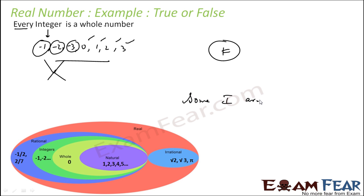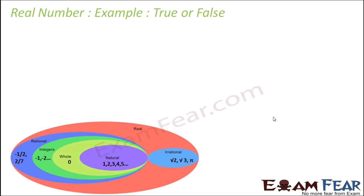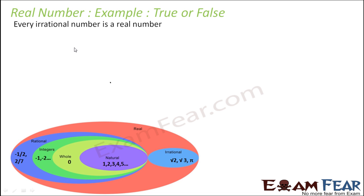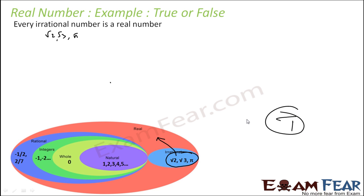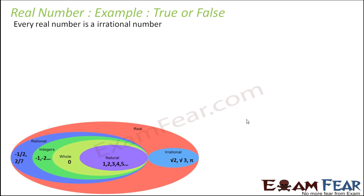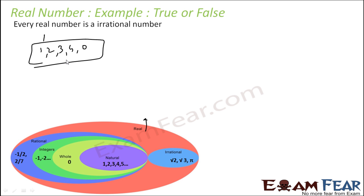Is every irrational number a real number? The irrational number set includes root 2, root 3, pi. All of these are real numbers — real numbers are nothing but rational and irrational numbers combined, so this is a true statement. The other way around: is every real number an irrational number? Real numbers also include 1, 2, 3, 4, 5, 0, which are not irrational but rational, so this statement is false.